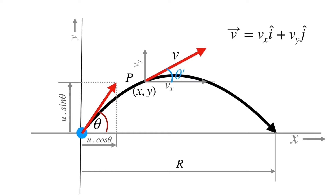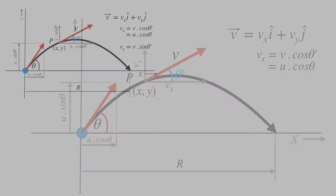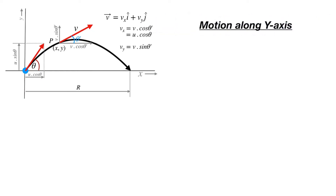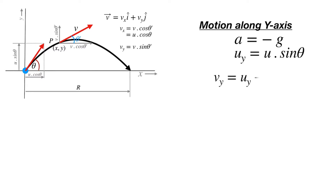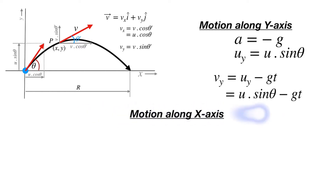We can represent this velocity in vector form as v = vx·i + vy·j, where vx equals v·cos(theta-dash), and since horizontal acceleration is zero this is constant and equals u·cos(theta), the initial x-component of velocity. To find the velocity in the vertical direction at any instant, we analyze motion in the y direction, where acceleration g acts downward due to gravity. The initial velocity in vertical direction is u·sin(theta), and vertical velocity vy at point P is given by the equation of motion for constant acceleration.